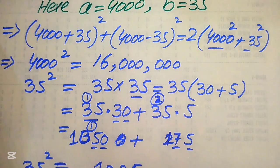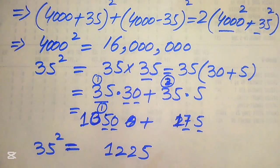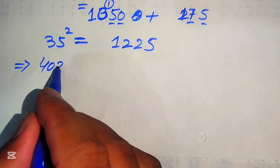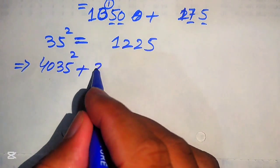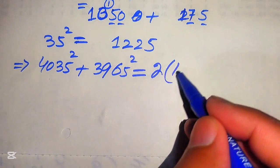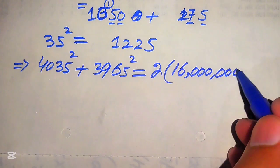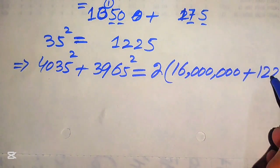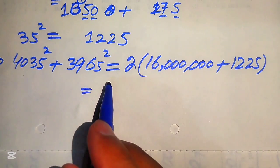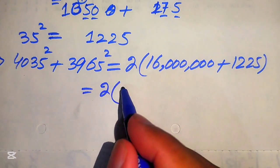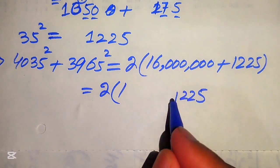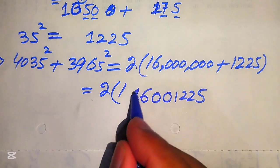Now we move back and substitute both values into our equation. Our equation becomes 4035² + 3965² = 2 × (4000² + 35²) = 2 × (16,000,000 + 1225). Adding these two values: 16,000,000 + 1225 = 16,001,225. We write this as 2 times of 16,001,225.